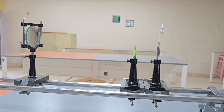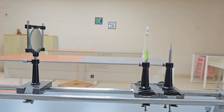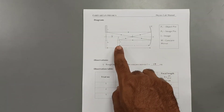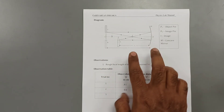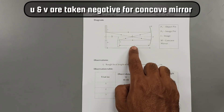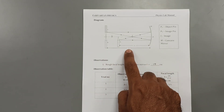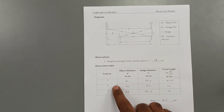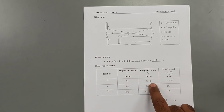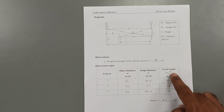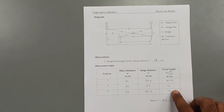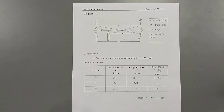I have taken all the readings. Here is the ray diagram: the distance between mirror and object pin is object distance u, and mirror and image pin is image distance v — taken after removing parallax. Rough focal length was 17 cm. For trial 1: u = 31 cm, v = 37.6 cm. Using the formula f = (u × v) / (u + v), we get the focal length. After three trials the mean focal length is 16.9 cm, which is close to the rough focal length.